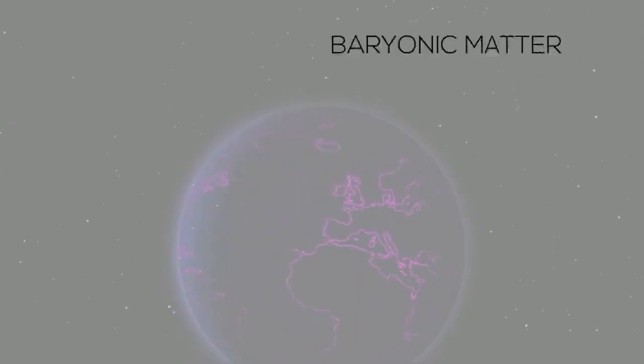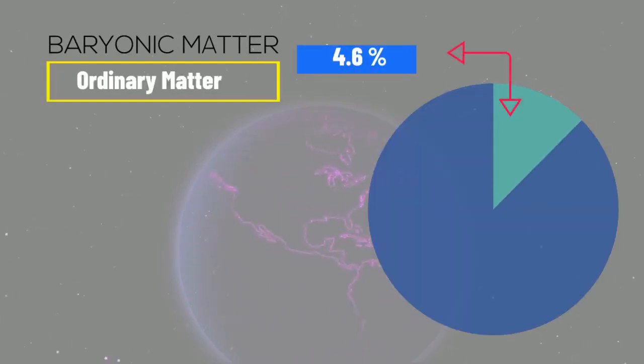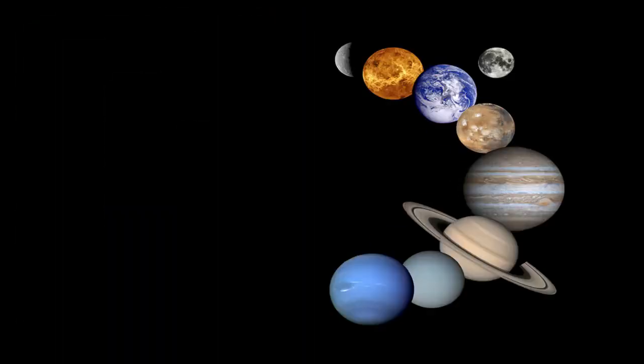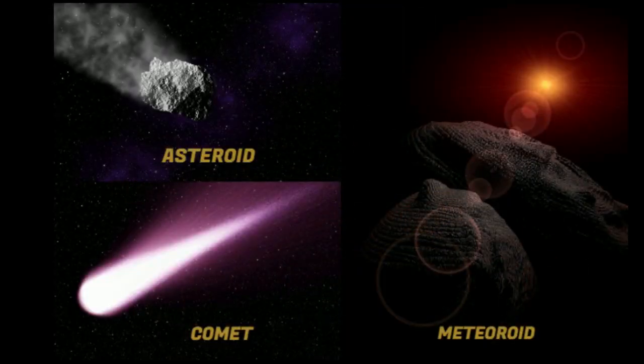The universe is made of 4.6% barionic matter, also known as ordinary matter. Ordinary matter consists of protons, electrons and neutrons. In other words, the atomic nuclei. Astronomers therefore use the term to refer all objects made of atomic matter. Atoms, planets, stars and galaxies, and other bodies such as asteroids, comets and meteoroids are all made of barionic matter.